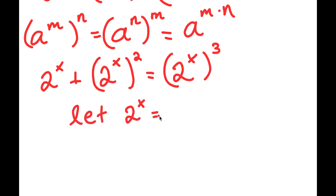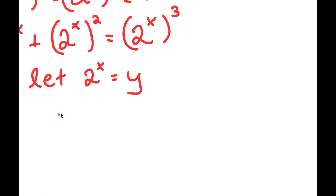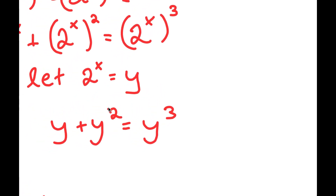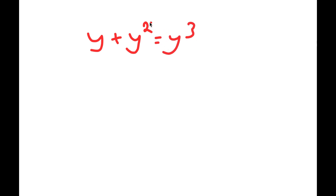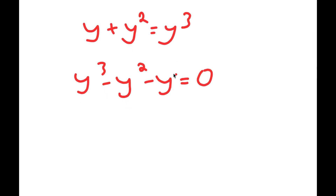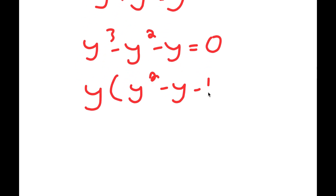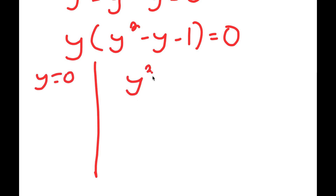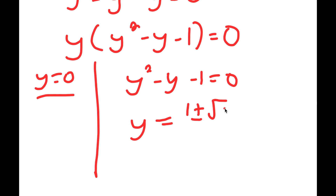Now I'm going to let 2 to the power of x equal y. So I have y plus y squared is equal to y to the power of 3. Rearranging: y cubed minus y squared minus y equals 0. Factoring out y: y times y squared minus y minus 1 equals 0. This gives me y equals 0, and y squared minus y minus 1 equals 0. Using the quadratic formula on the second equation, I get y equals 1 plus or minus the square root of 5, all over 2.